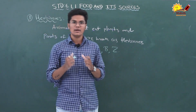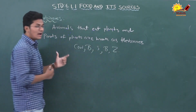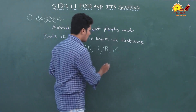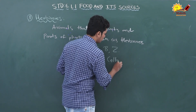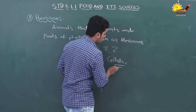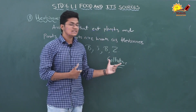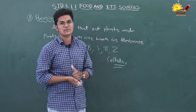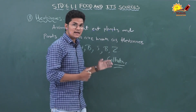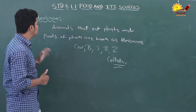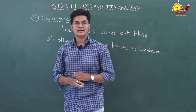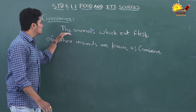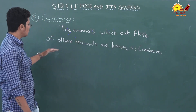Herbivorous animals have a digestive system that can digest plants directly. We humans have to cook plants properly to digest them. Why can't we eat plants directly like animals? Because plants have a substance known as cellulose. This cellulose does not digest properly in human beings without cooking plants, that's why we cannot eat plants directly.